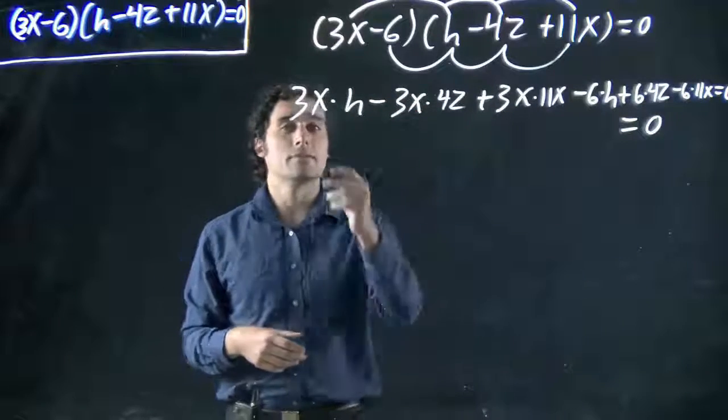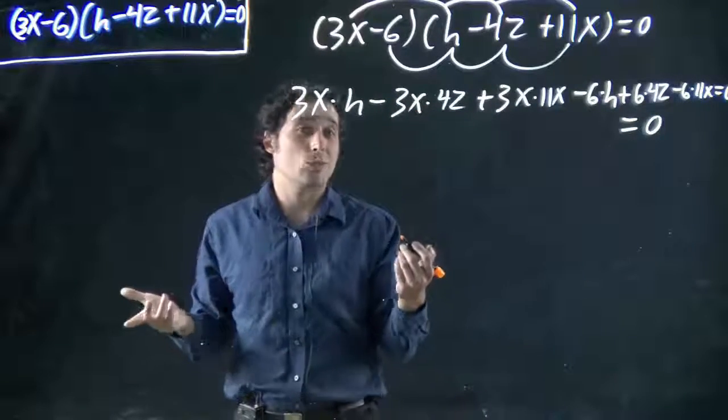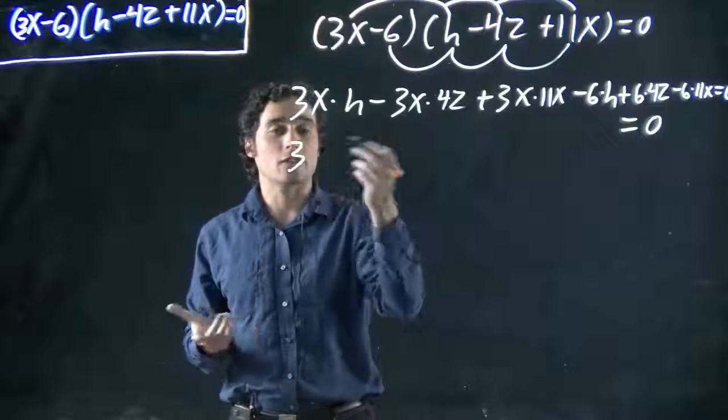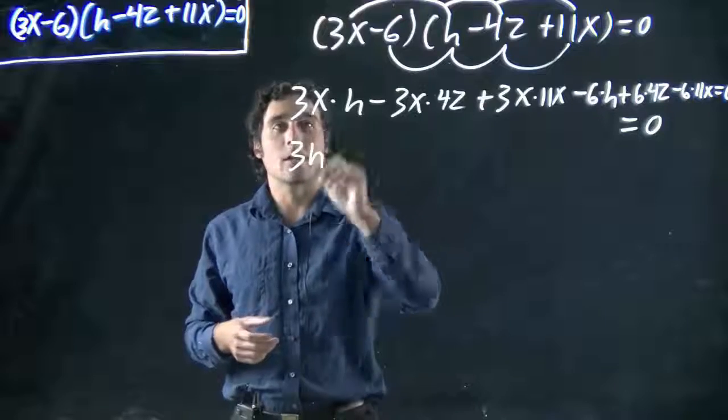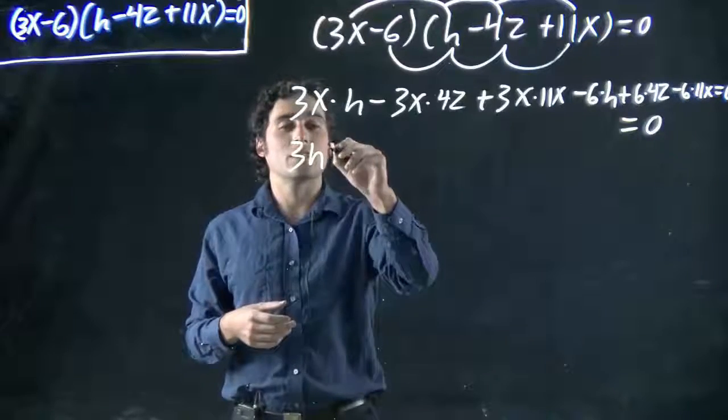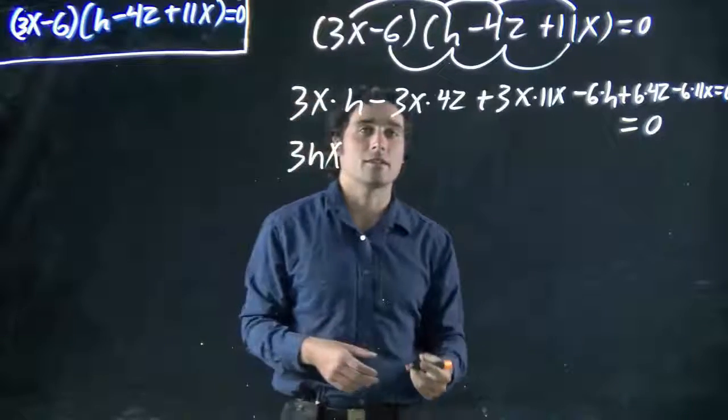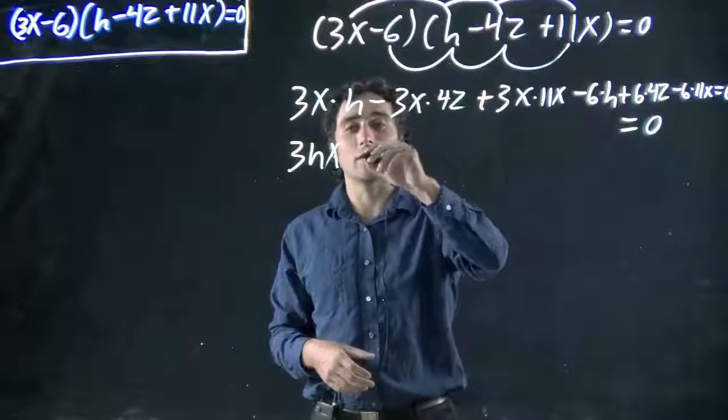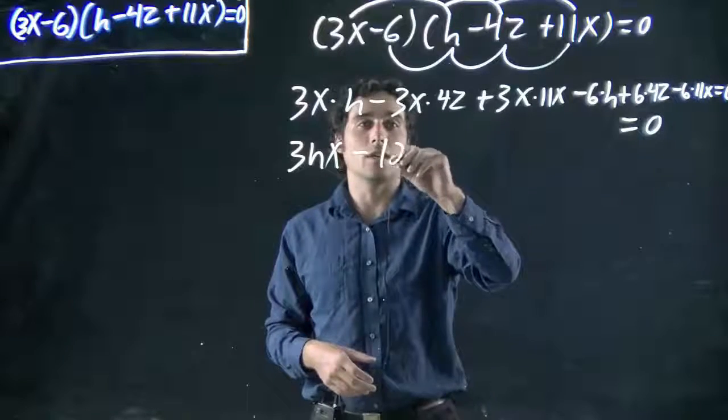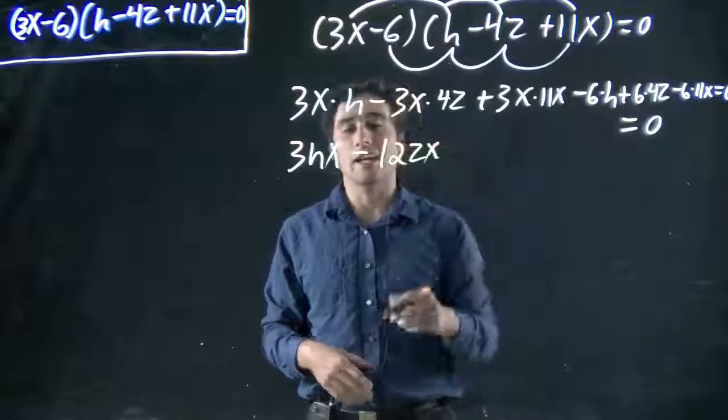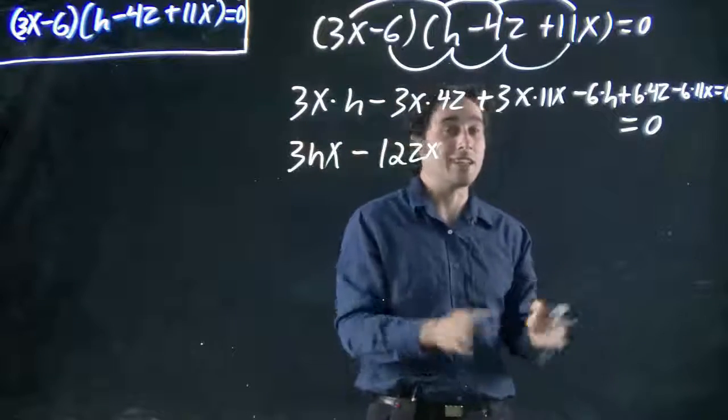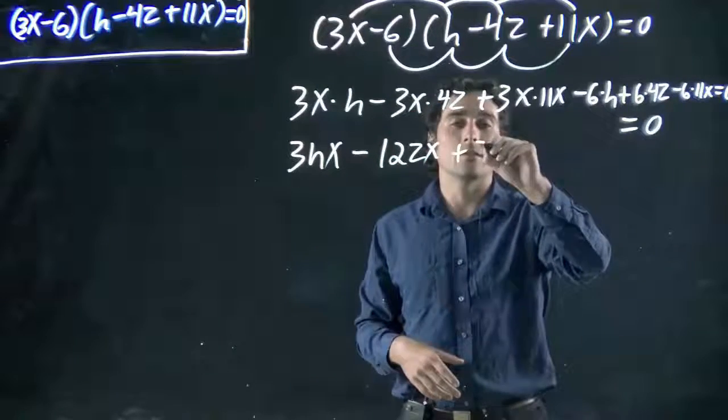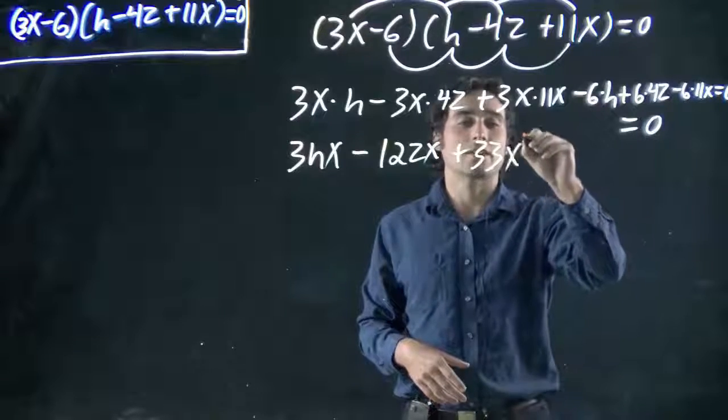So what do we have? 3x times h, well, we can't simplify that anymore. That's just 3hx or 3xh, whatever way we want to write it. Since x is the variable we assume in this case, I'll put it at the end. Then we got this term, 3x times 4z. Well, that just becomes minus 12zx. Again, I'm just choosing to put the x's at the end. 3x and 11x, those can be combined to become 33x squared.